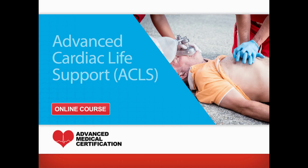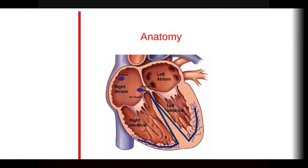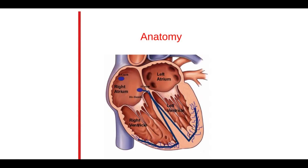Hello again. In this section we'll be covering normal heart anatomy and physiology in advanced cardiac life support. Here we have the human heart, and it's divided into four chambers, the two upper atria and the two lower ventricles.